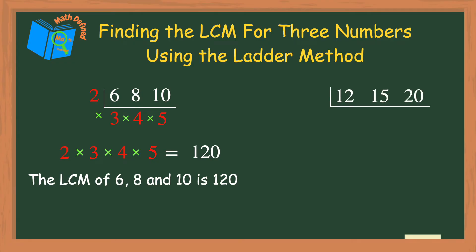Now let's find the LCM of 12, 15, and 20. Again, I need to choose a factor that will divide evenly into at least two of the numbers inside the ladder. I know that 3 divides evenly into 12 and 15, so I'll place the 3 outside the ladder.